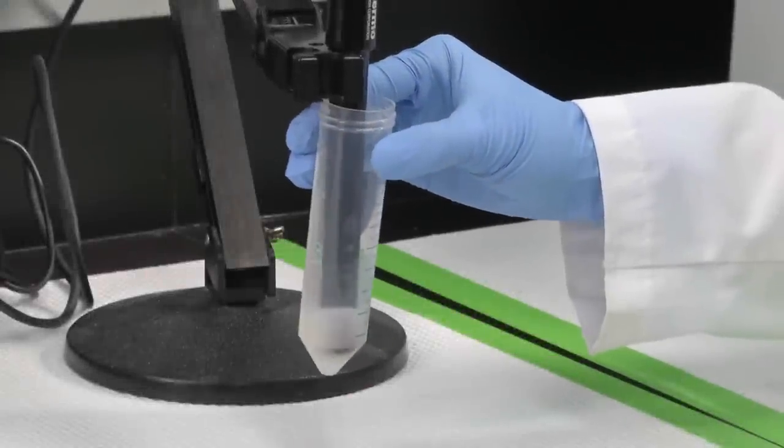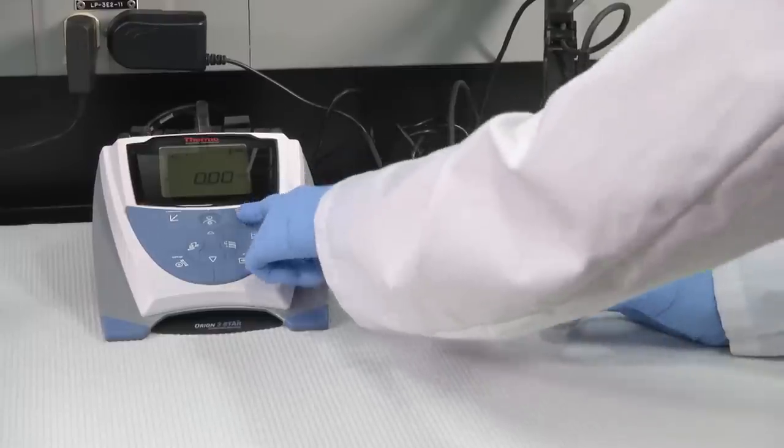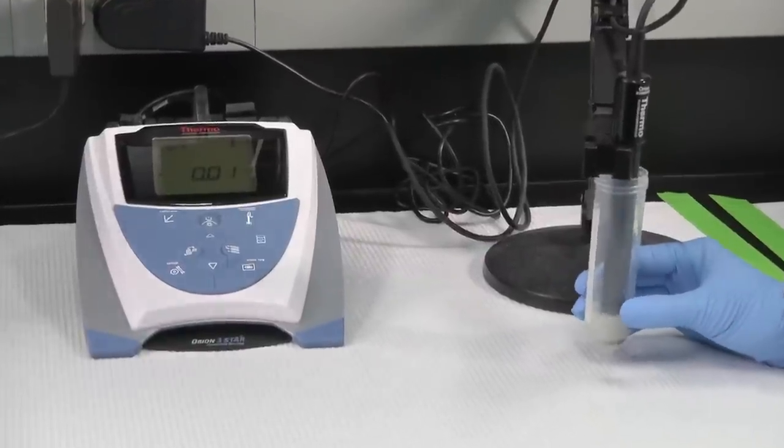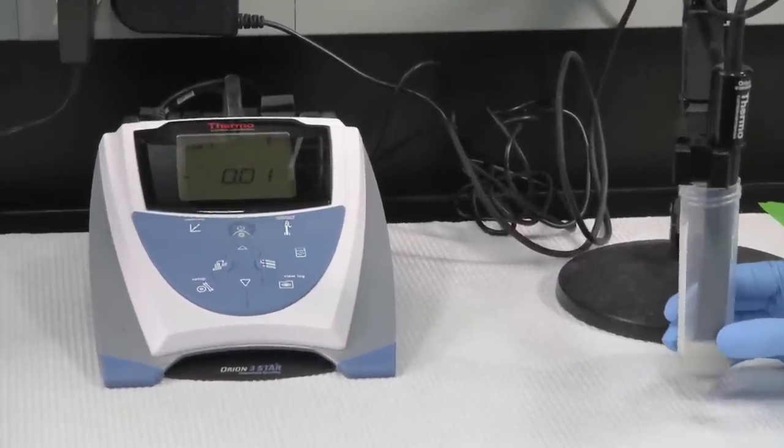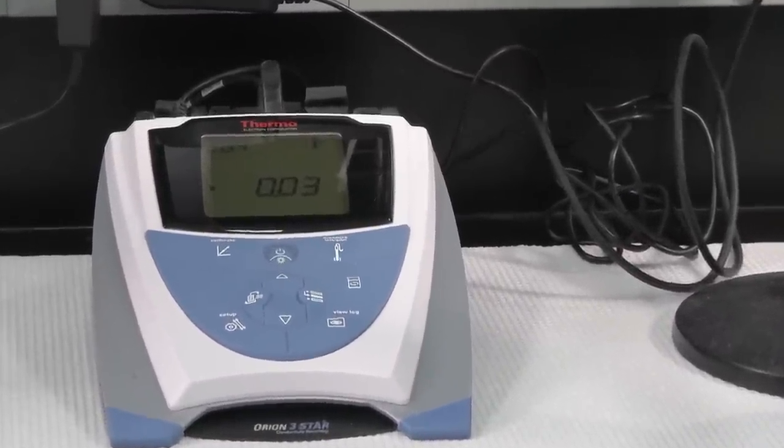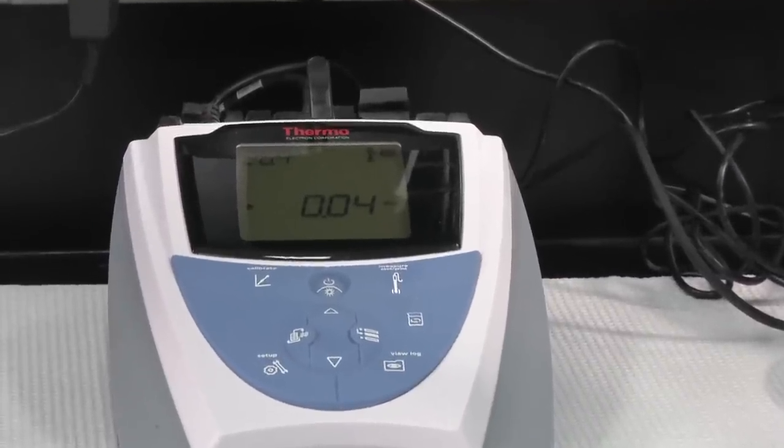Measure the conductivity of the emulsion. The conductivity of the second emulsion was much lower than the first, indicating that a water and oil emulsion was formed rather than an oil and water emulsion.